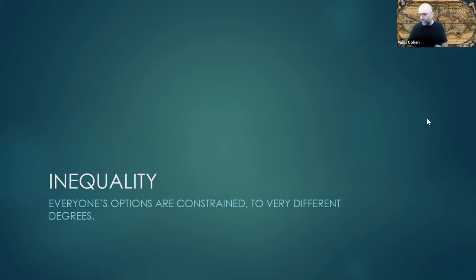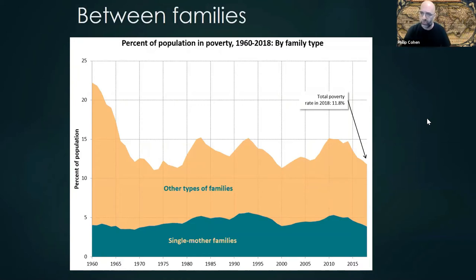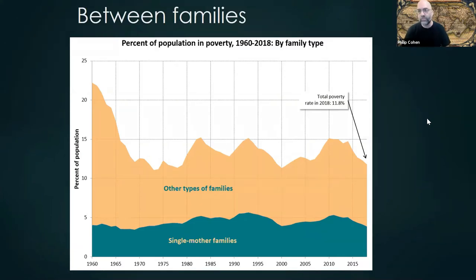Everyone's options are constrained, but to different degrees. I've been using four types of inequality for a long time. Inequality between families is just one kind of inequality — rich families and poor families. This is the poverty rate through 2018, showing about 12-15% of the population are in poor families. Then there's the types of families: single mother families versus everybody else. Single mother families are traditionally at a higher risk of poverty for reasons that are obvious to all of you. So inequality between families is just one kind of inequality.